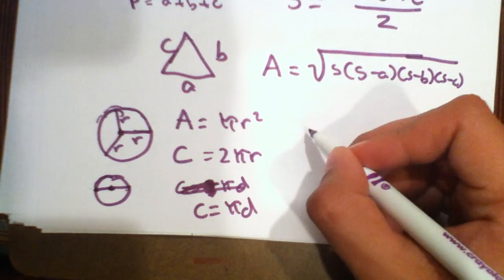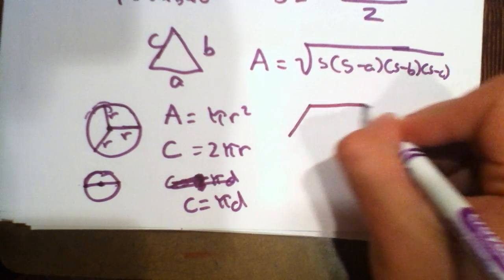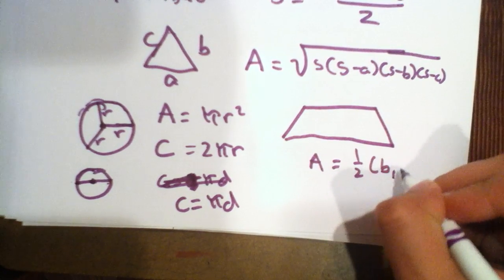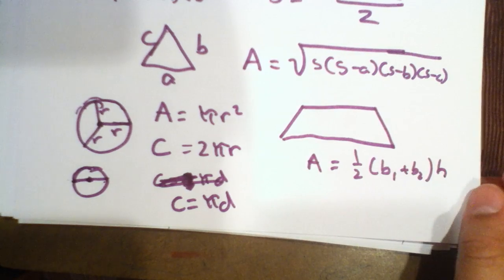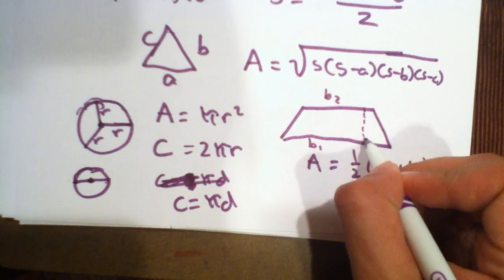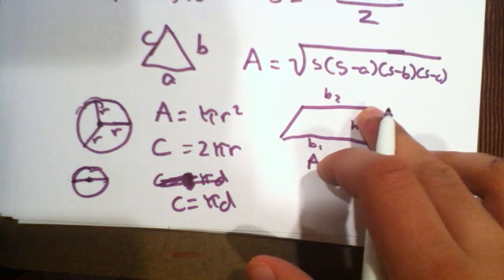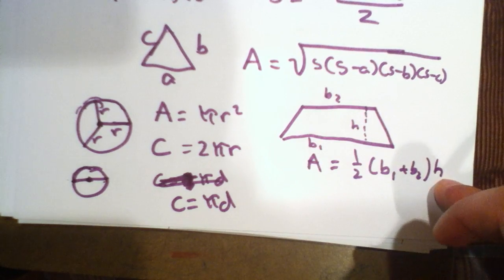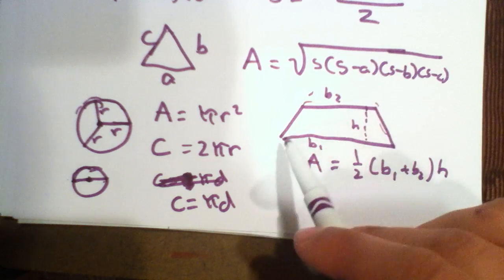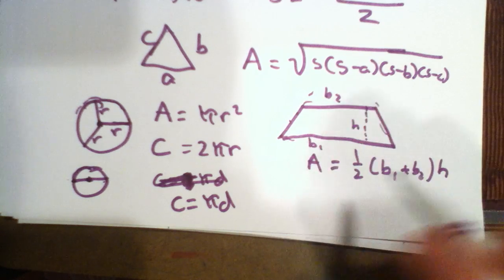Now, how about a trapezoid? The formula for a trapezoid area is 1/2 times b1 plus b2 times the height. If this is base 1 and this is base 2, and the height is here, then 1/2 times this base plus that base, so you're kind of averaging the bases and multiplying it by the height. And the perimeter of the trapezoid would just be the sum of all four sides.